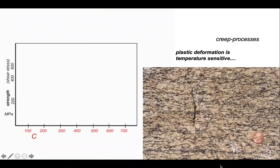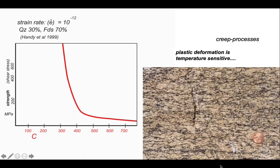Plastic deformation is temperature sensitive. As rocks warm up, they become weaker, and there have been various attempts to quantify this behavior. If we take a granite composition of quartz and feldspar at a particular strain rate, we can calculate how its strength varies with temperature, and we can see that it drops away very quickly as temperature increases. We also know that temperature increases downwards in the crust, and if we know the geothermal gradient, we can convert the temperature scale into a depth scale.